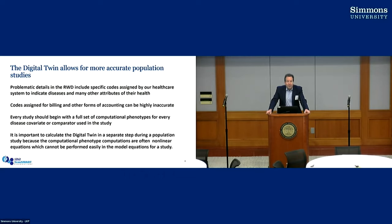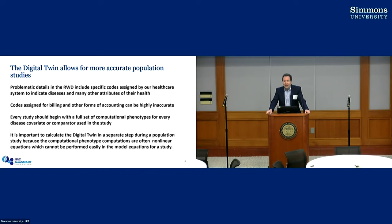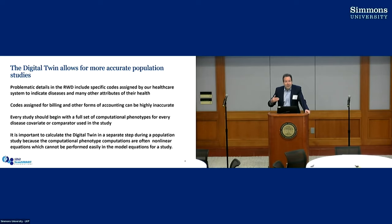The digital twin will allow us to do much more accurate population studies. Even at the first pass — even in a low-resolution state — we can really do a lot for population studies by allowing what I'm calling problematic details to be taken care of on a one-by-one basis. We actually developed our own framework: a low-resolution and high-resolution digital twin.